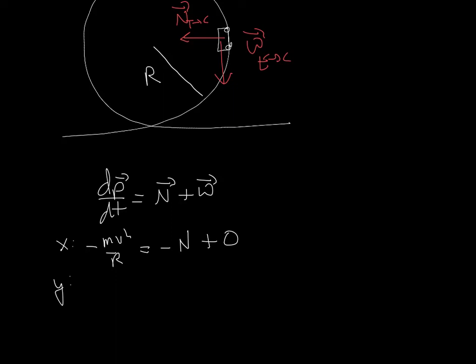Now, the y component of dp dt, this is going to be the rate of change of the parallel component. This is the rate of change of the magnitude of the momentum. So I would call this minus mdv dt, the speed. Or you could also write that as minus mA. Where a is the magnitude of the rate of change of the velocity. It's basically the acceleration. And then that's going to be equal to the y component of the normal force, which is 0, plus the y component of the weight, which is minus mg.